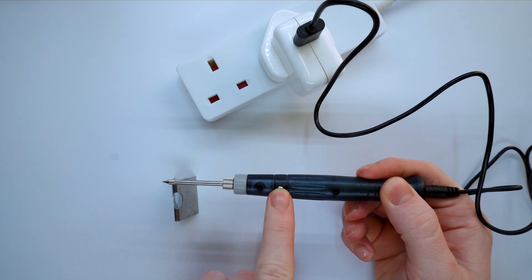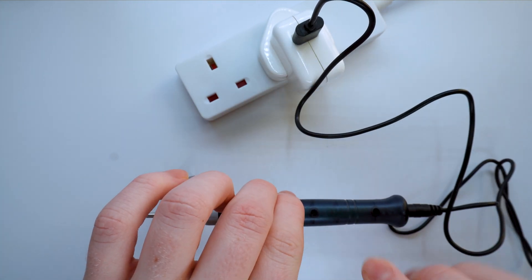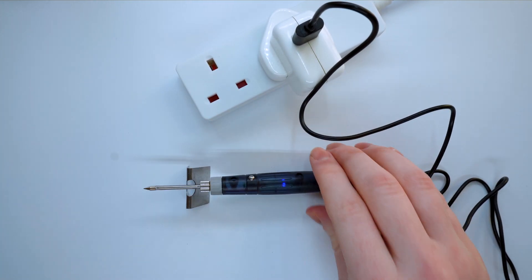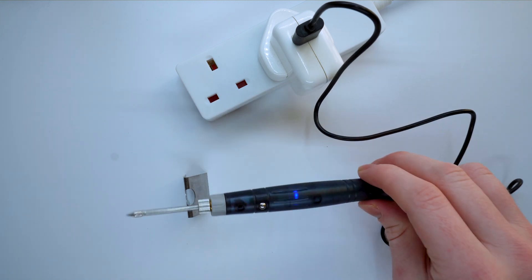Take off the protective cap, turn the soldering iron on by clicking the silver button and you'll see a blue LED will turn on which shows that the soldering iron is on. So currently it is heating up. It should take around 20 to 30 seconds to heat up.